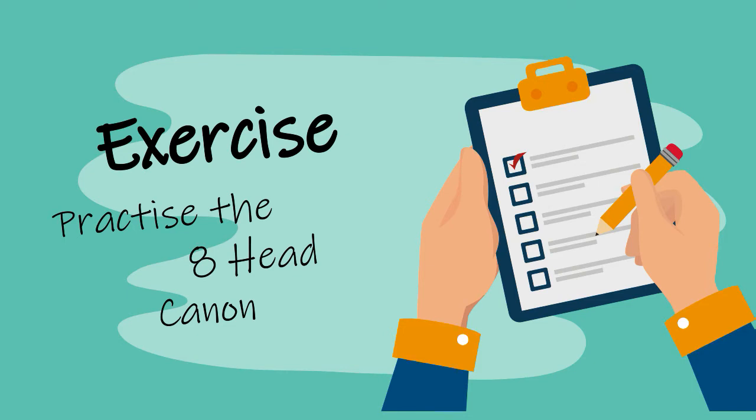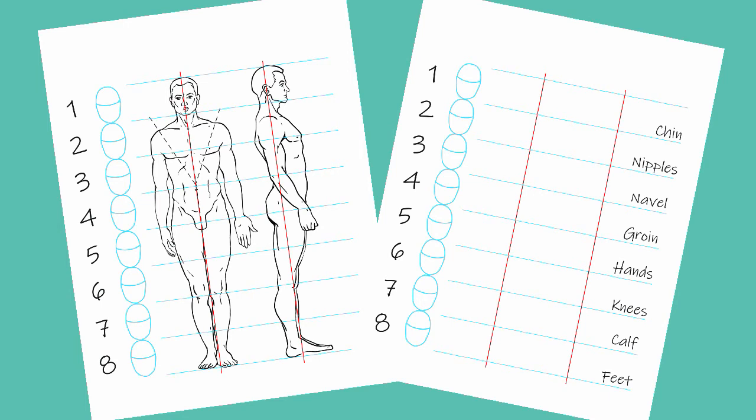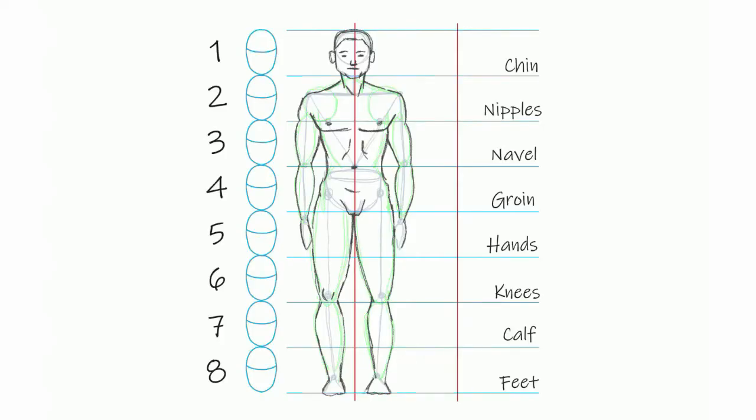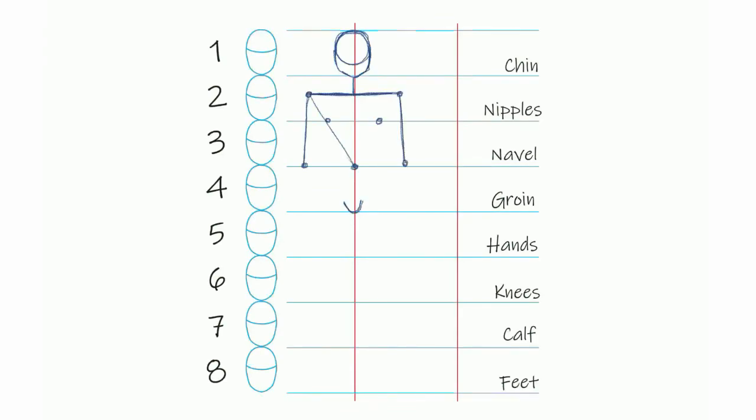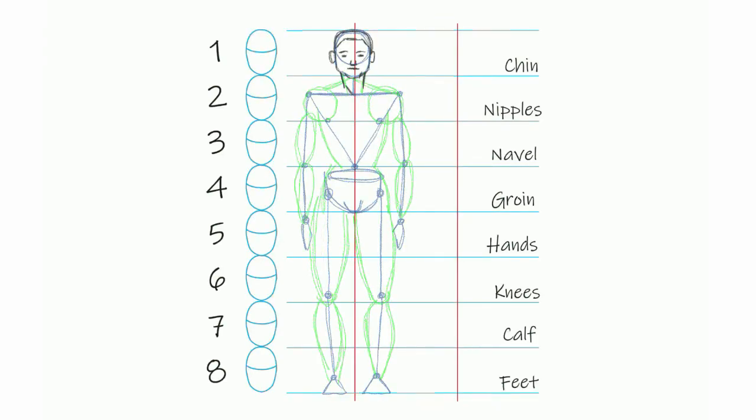Head on over to our blog and get the printout that you can download for free. And with that, you can practice the eight head canon. Make sure you can recite it out of your head so you know exactly where is what in the human body.